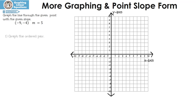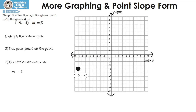Let's see how you did. The first thing we need to do is graph the ordered pair negative nine, negative four. Then you're going to put your pencil on the point. Then we need to figure out the rise over the run. Our slope is five — it's a whole number. Anytime we have a whole number and write it as a fraction, we always put it over one. The slope always has to be a fraction because we need to figure out our rise over run.